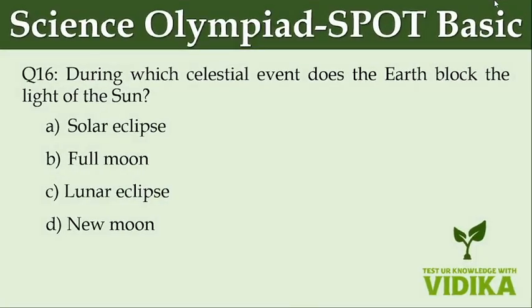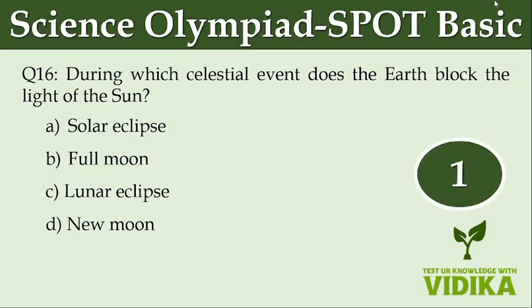During which celestial event does the earth block the light of the sun? Option A, solar eclipse. Option B, full moon. Option C, lunar eclipse. Option D, new moon.